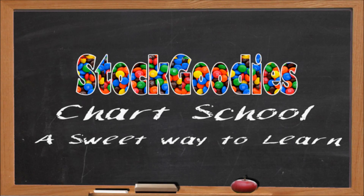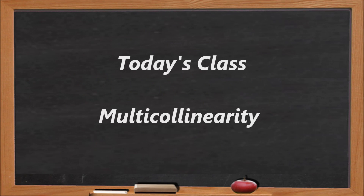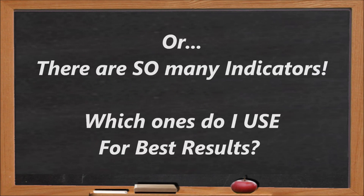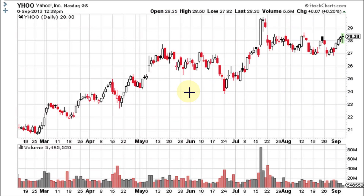Hello traders and welcome to Stock Goodies Chart School. Multicollinearity is a statistical term for a problem many chartists have, whether knowingly or unknowingly — they are using too many indicators of the same type that give the same kind of information.